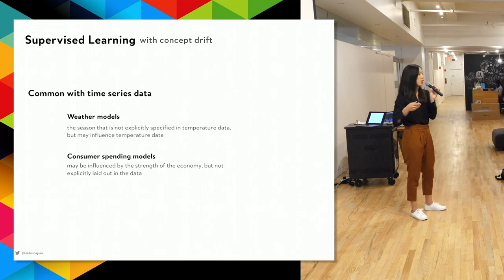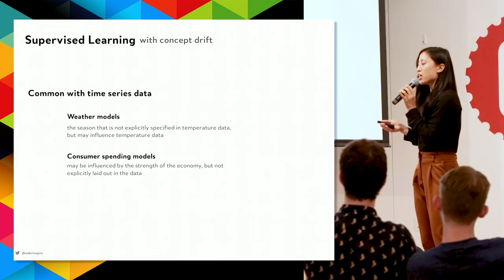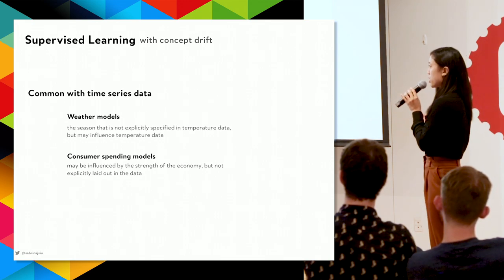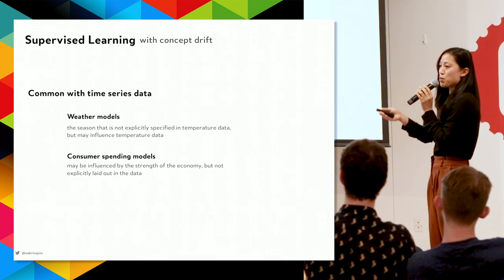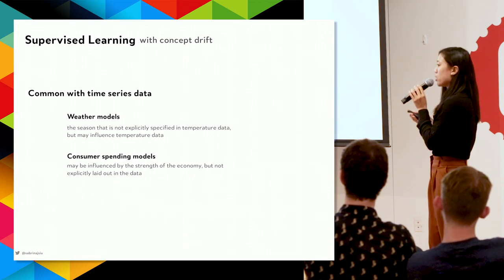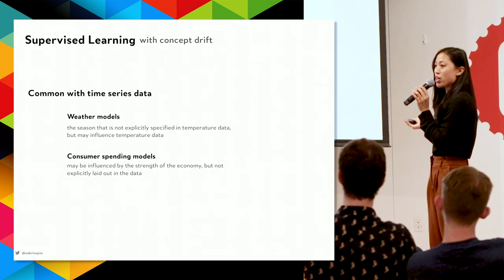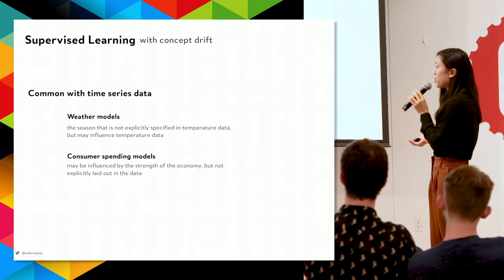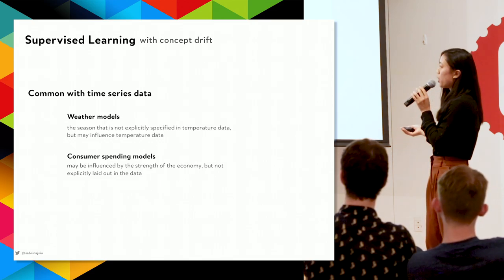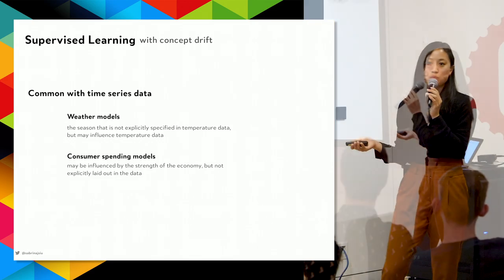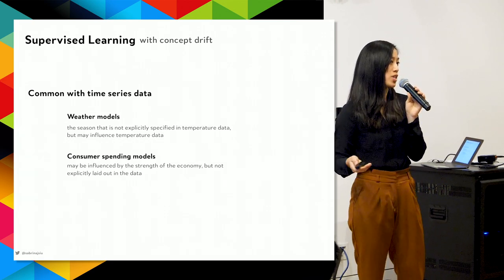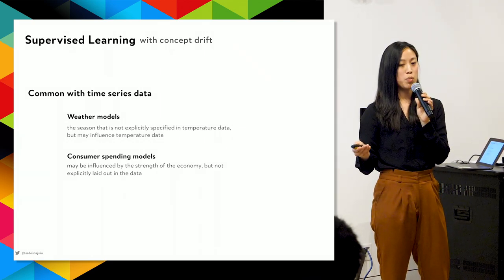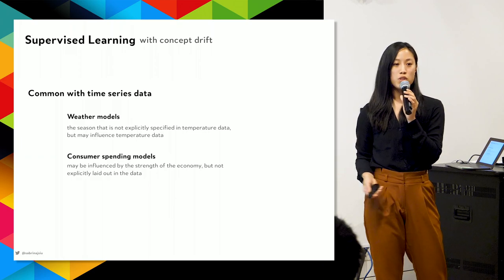To put it in terms beyond potatoes and tomatoes: weather models don't account for seasonal changes and may become inaccurate as seasons change. Or consumer spending models based on normal cash spending don't account for a better or worse economy, and so they may drift over time.